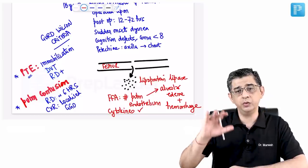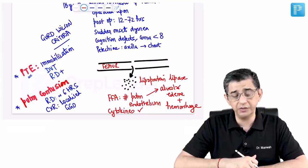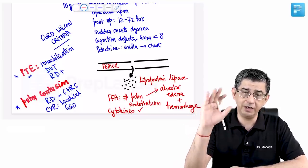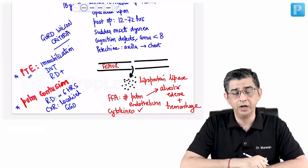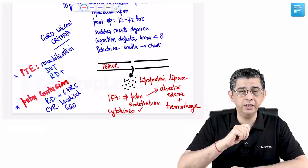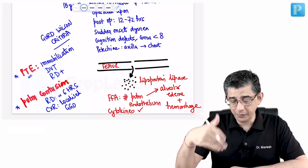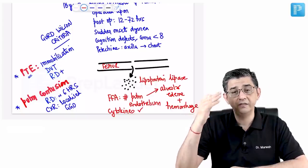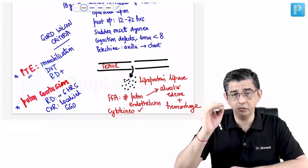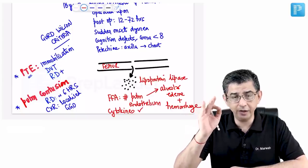The release of cytokines contributes to ventilation-perfusion imbalance, which is understandable. But we also need to understand why these patients are having CNS manifestations.